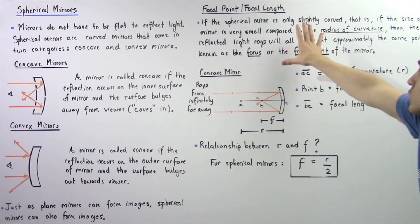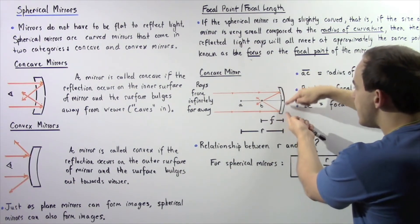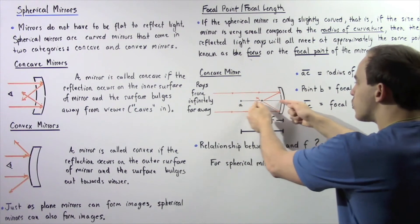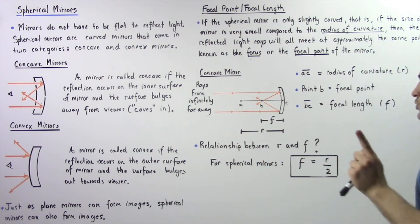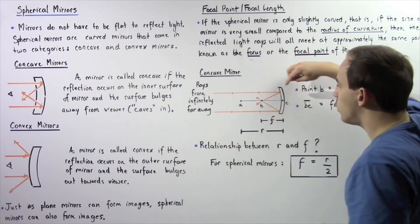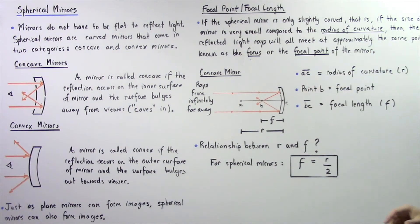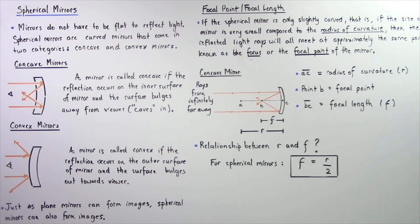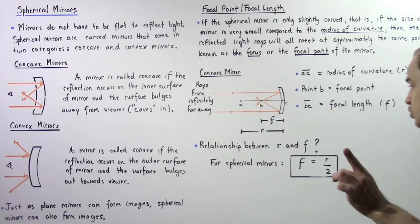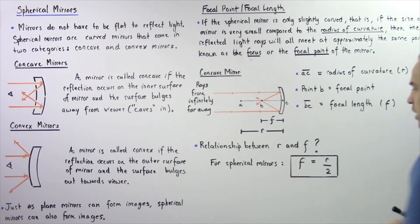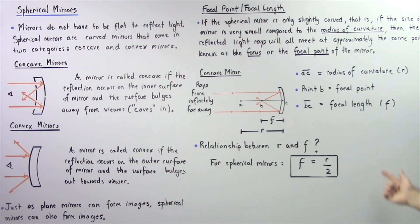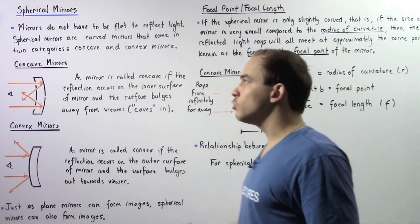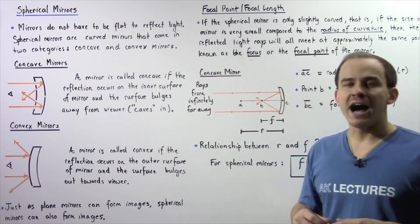Going back to this statement: if the mirror is very small compared to the radius of curvature, then we can assume all the reflecting rays will meet at a single point known as the focus or focal point. As for the relationship between R and F — although we won't derive it here — for spherical mirrors the focal length F is equal to the radius of curvature R divided by 2. This equation will become important when solving problems using concave and convex mirrors.